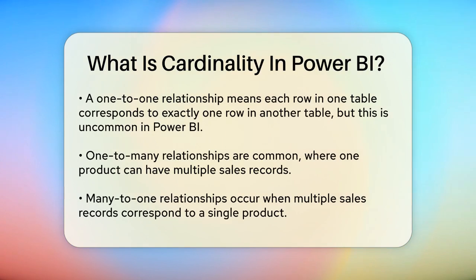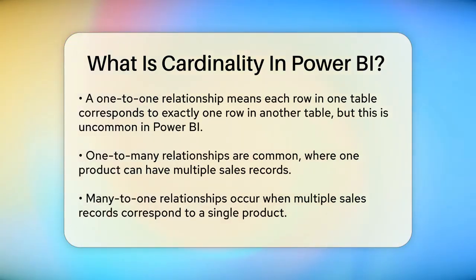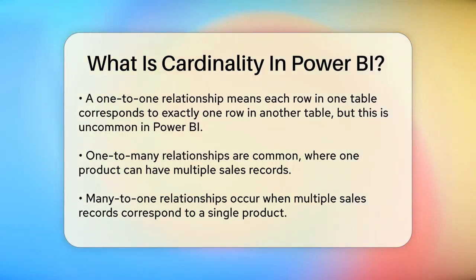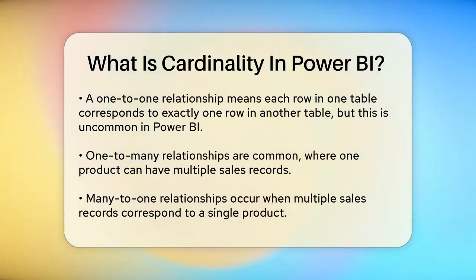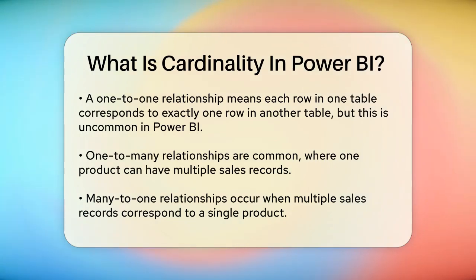The one-to-many and many-to-one relationships are more common. For example, if you have a product table and a sales table, a product can have many sales records, but each sales record is associated with only one product. If you link the tables using the product ID, it's a one-to-many relationship if you start from the product table, and many-to-one if you start from the sales table.